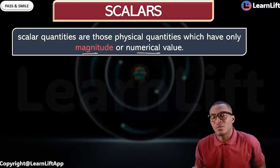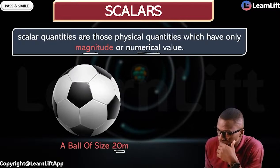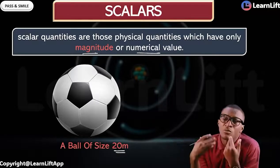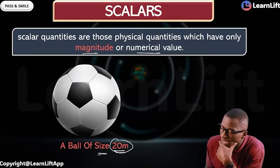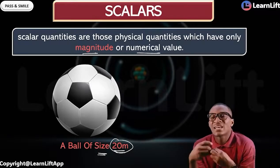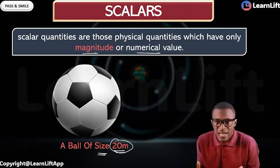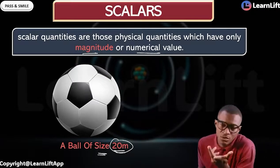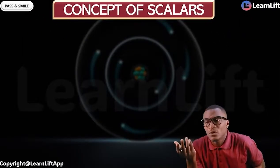For example, this ball — we can see that the size of this ball is 20 meters. That meter talks about length. Because we can attach a value to it talking about the size, we therefore see that size is in essence a scalar quantity, because we can assign a magnitude or numerical value. So scalar quantities are physical quantities which have only magnitude or numerical value.